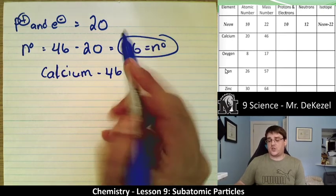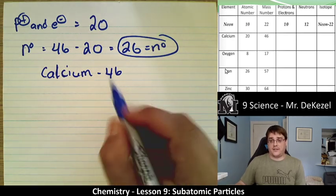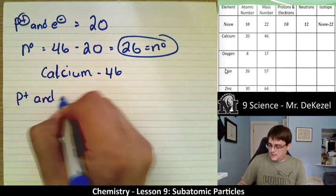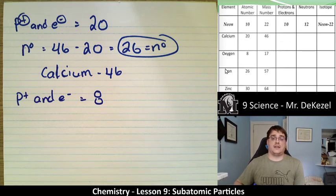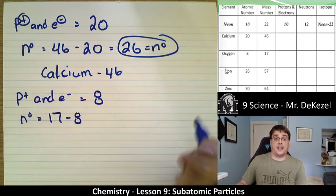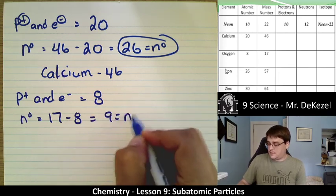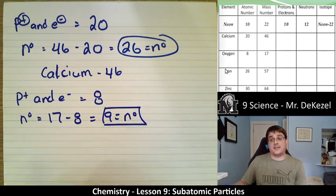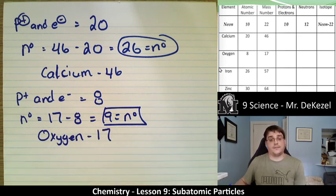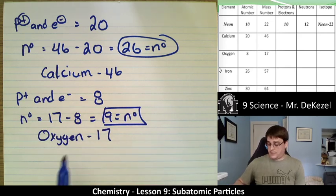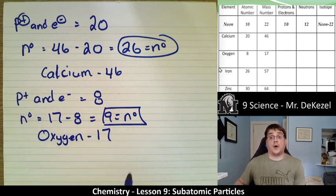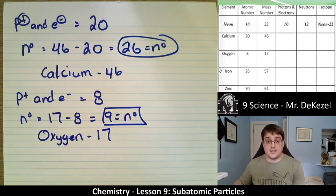Calcium-46 has 20 protons, 20 electrons, and 26 neutrons. For oxygen: protons and electrons equal 8 (atomic number 8). Using mass number 17: 17 minus 8 is 9 neutrons. We write this as Oxygen-17. I'd suggest you pause the video and try the next two on your own, then unpause and I'll go over them.